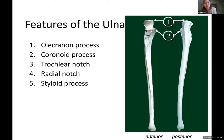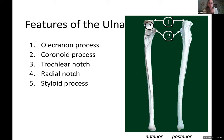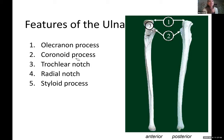Then we have the coronoid process. Of the priorities, I almost always ask about the olecranon process because it's a really obvious palpable structure. The coronoid process is just the lower lip — if you think of the whole ratchet as a mouth, the top part is the olecranon process and the bottom part is your coronoid process. You can't palpate it because it's deep inside. The trochlear notch is the actual smooth inner surface going around the hinge of the ulna — it goes around the trochlea of the humerus. So the trochlear notch rotates around the trochlea of the humerus.